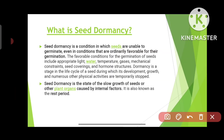First, we will study what seed dormancy is. Seed dormancy is a condition in which seeds are unable to germinate even in conditions that are ordinarily favorable for their germination — conditions which are supposed to be favorable for the seeds, but in those conditions the seed is still not germinating. The favorable conditions for germination include appropriate light, water, temperature, gases, mechanical constraints, seed coverings, and hormone structures.